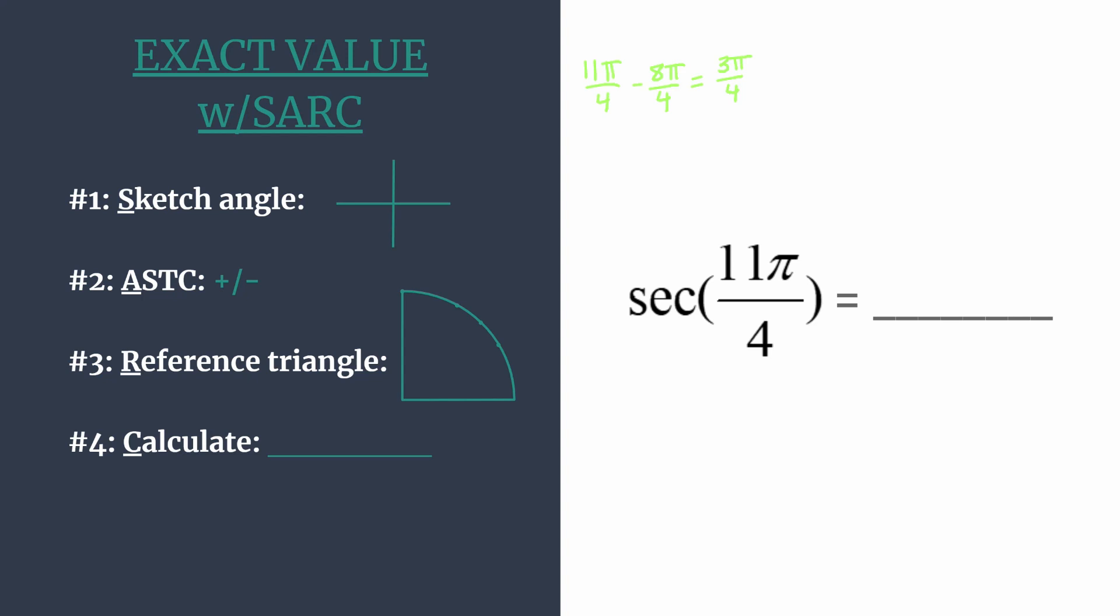And what that means is they share the same terminal side. You rotate differently to get there. You rotate one more counterclockwise rotation to get to 11π over 4, but their terminal side is in the exact same location. So let's sketch the terminal side.